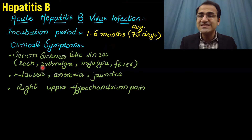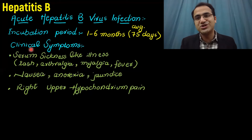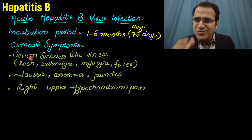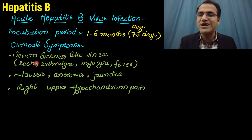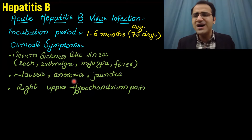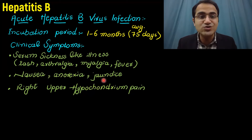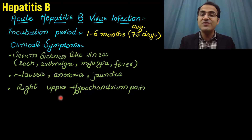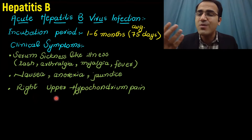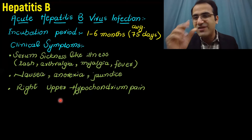The serum sickness-like illness is thought to occur due to immune complex formation in hepatitis B virus infection. That immune complex formation leads to rash, arthralgia, myalgia, and fever. The patient can also have nausea, anorexia, and jaundice due to liver damage from increased bilirubin in the blood. Patients will present with right upper hypochondrium pain or tenderness because the liver is damaged.